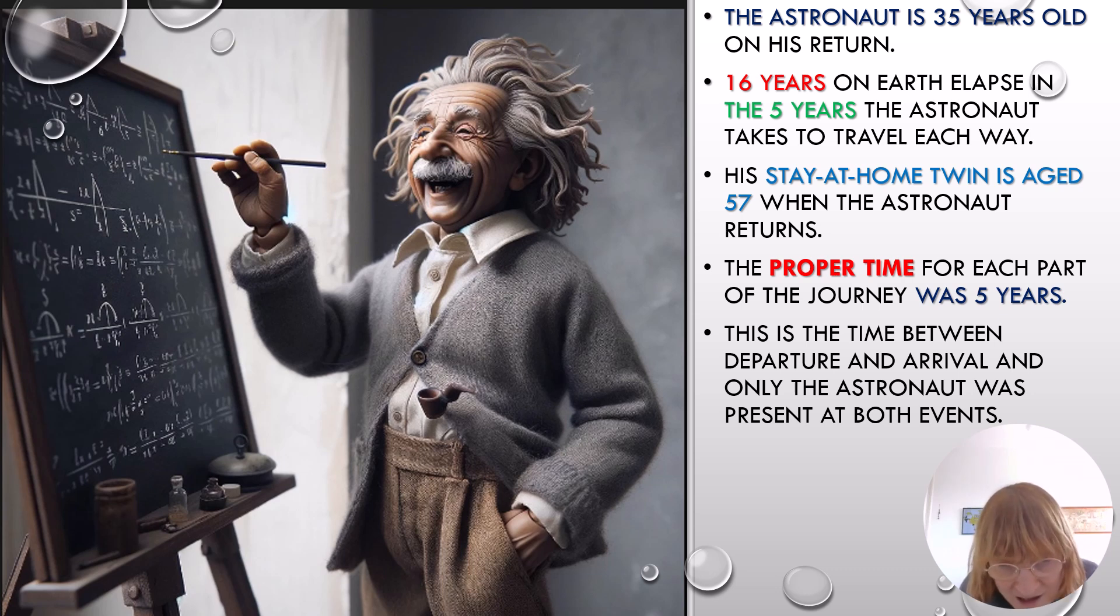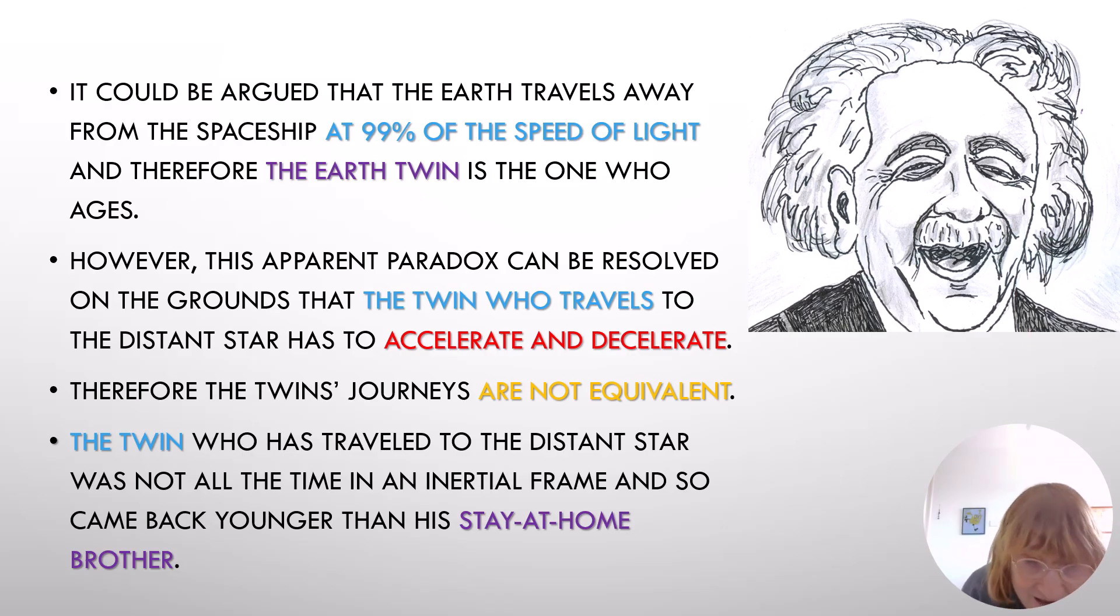The proper time for each part of the journey was five years. This is the time between departure and arrival, and only the astronaut was present at both events. It could be argued that the Earth travels away from the spaceship at 99% of the speed of light and therefore the Earth twin is the one who ages. However, this apparent paradox can be resolved on the grounds that the twin who travels to the distant star has to accelerate and decelerate. Therefore, the twins' journeys are not equivalent. The twin who has traveled to the distant star was not all the time in an inertial frame and so came back younger than his stay-at-home brother.